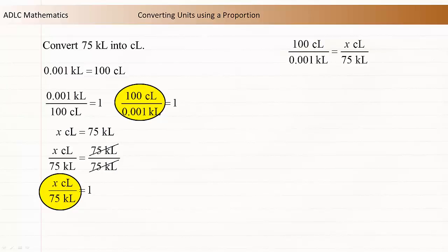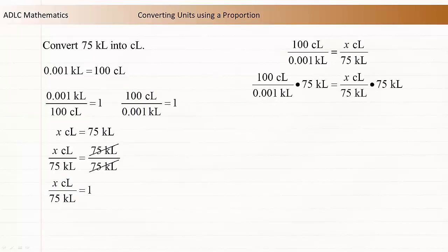Use these two expressions to write an equality. The x is being divided by 75 kiloliters, so multiply both sides of the equation by 75 kiloliters to isolate x. On the left side of the equation, the kiloliters units are reduced, and on the right side, the two 75 kiloliters are reduced.